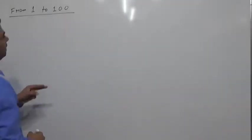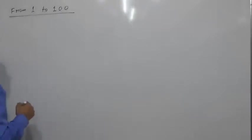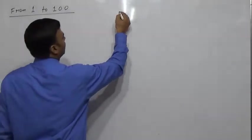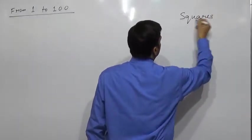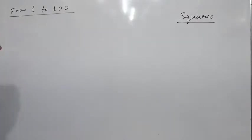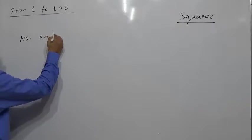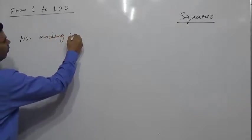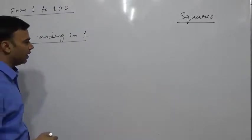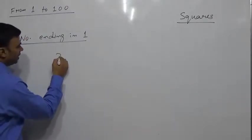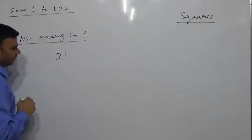We will divide the numbers into different categories. The first category of numbers is numbers ending in 1. Let us calculate the squares of numbers ending in 1. Suppose we have the number 31 — how do we calculate the square of 31?